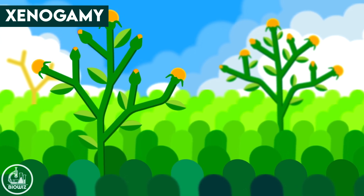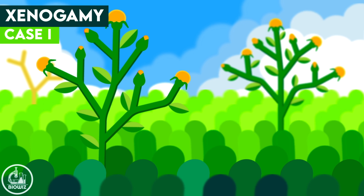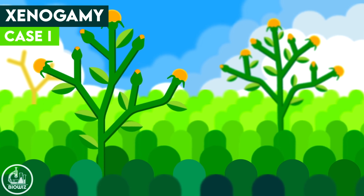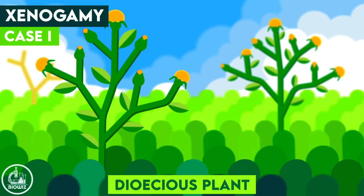There are three possible cases for xenogamy to occur. The first is if the plant is dioecious, i.e. the sexes are separate.